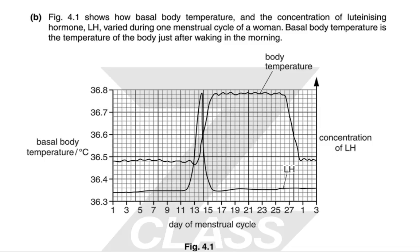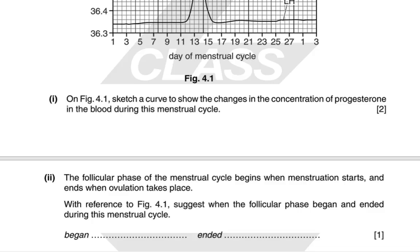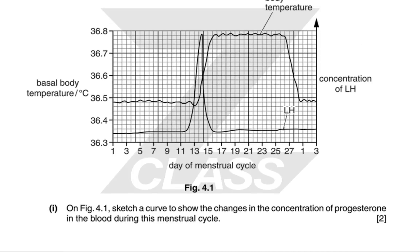Figure 4.1 shows changes in basal body temperature and LH concentration during a menstrual cycle. Basal body temperature increases after ovulation and then decreases at the end of the cycle. Progesterone is low until around day 13, then once ovulation takes place it peaks around day 22, before returning to a low level by the end of the cycle.